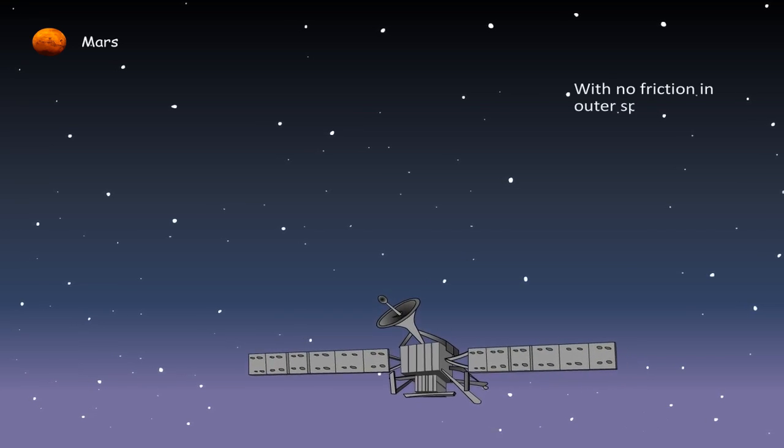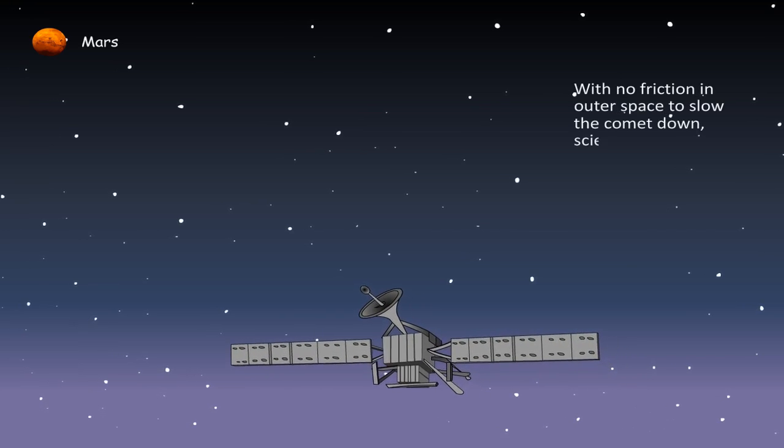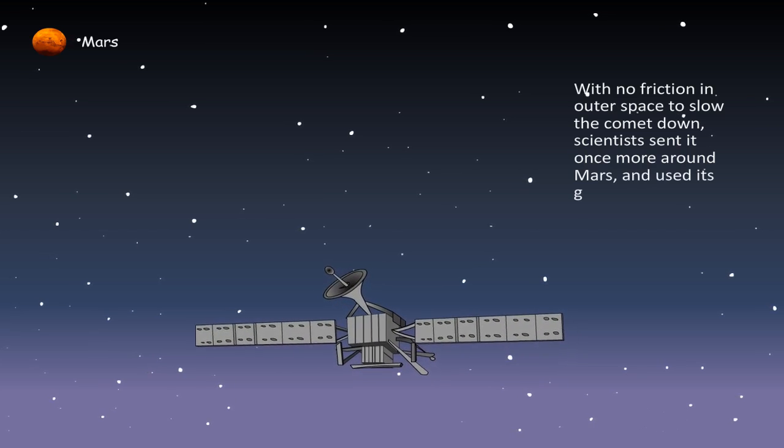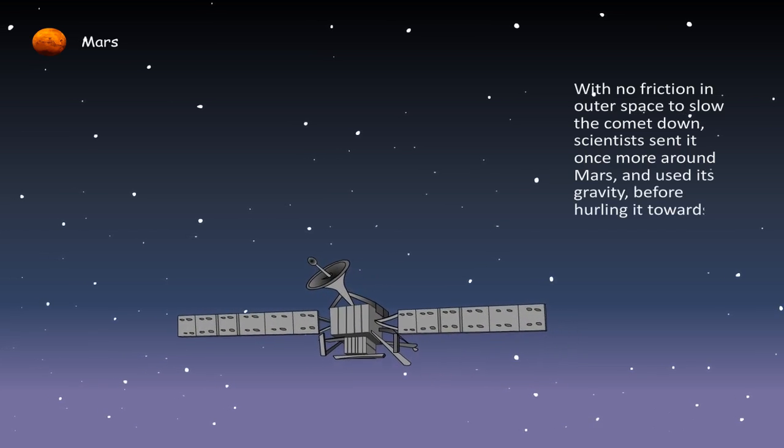With no friction in outer space to slow the comet down, scientists sent it once more around Mars and used its gravity before hurling it towards the comet.